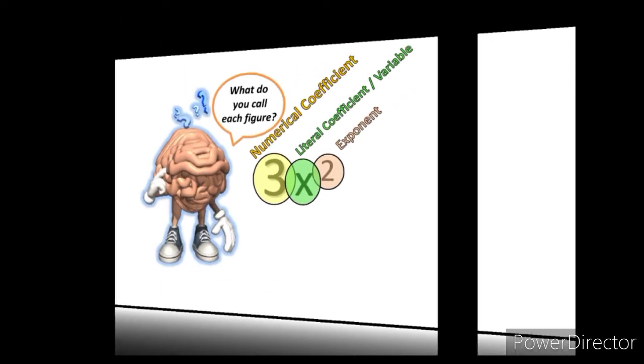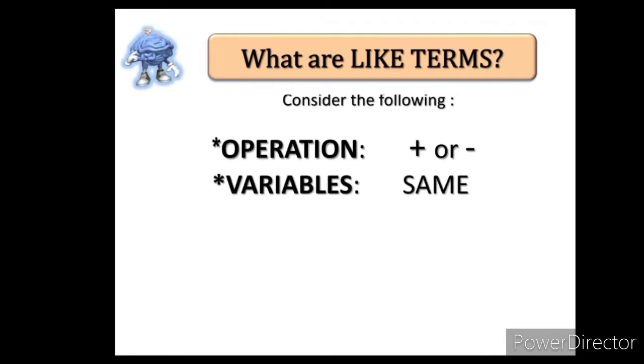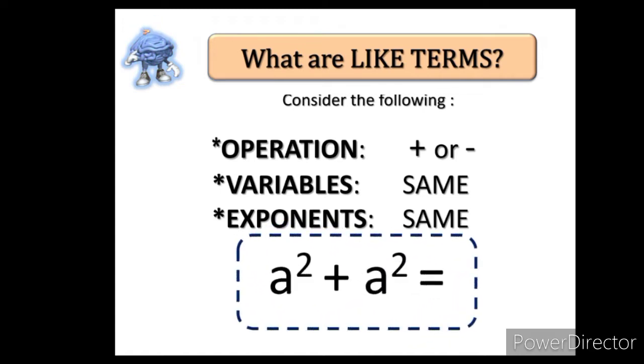Let us proceed because nothing can stop us. For you to easily identify like terms, I want you to consider the following. The first is the operation. The operation should be addition or subtraction. The next one are variables. The variables should be the same. And lastly, the exponents of the variables should be the same as well.